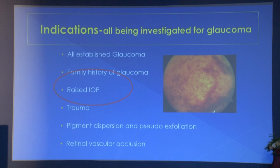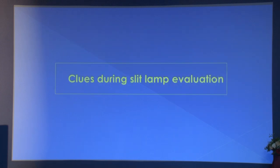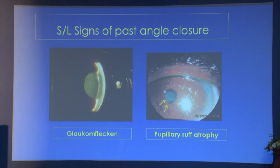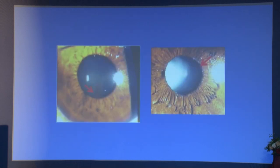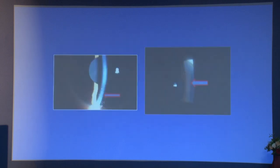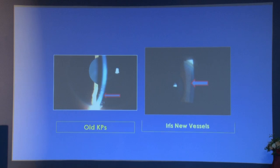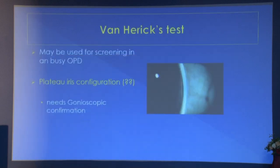Raised IOP is the most important indicator. Slit lamp clues to angle closure glaucoma include pupillary ruff atrophy as a subtle sign. Pigment dispersion shows Krukenberg spindle, and pseudoexfoliation material can be seen on the pupil margins — these are signs suggestive of secondary glaucoma. Iris new vessels can also be seen. The Hirschberg test may be used for screening, and plateau iris configuration is sometimes visible but needs gonioscopy confirmation.